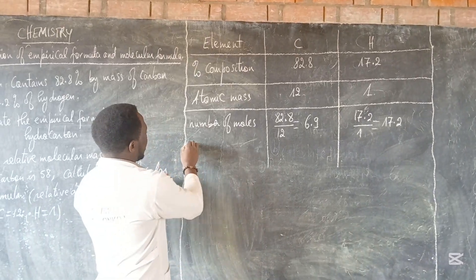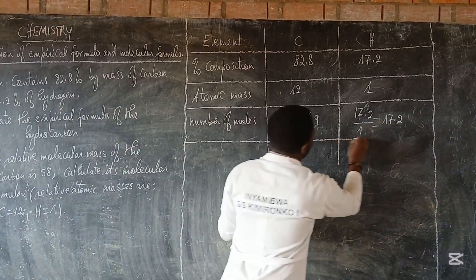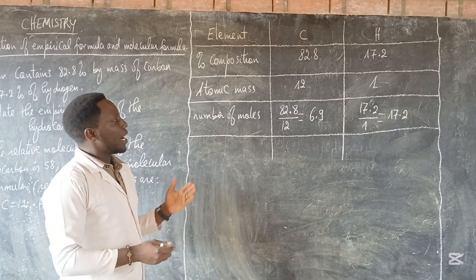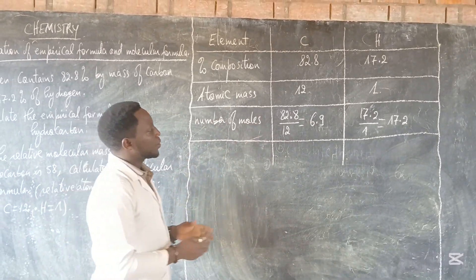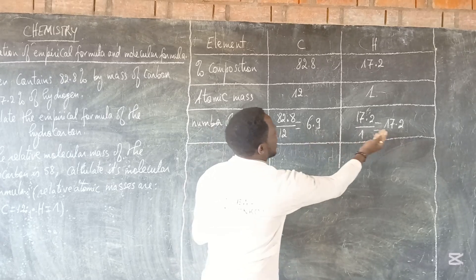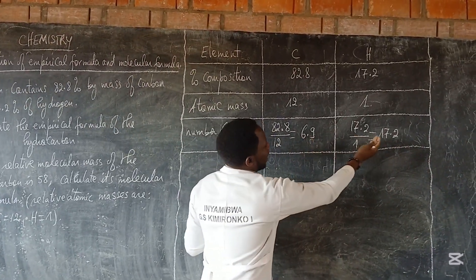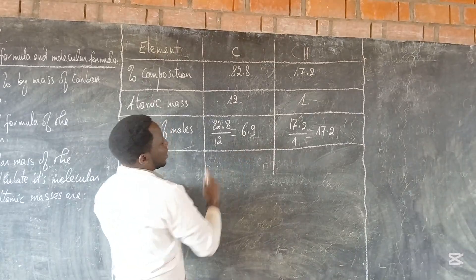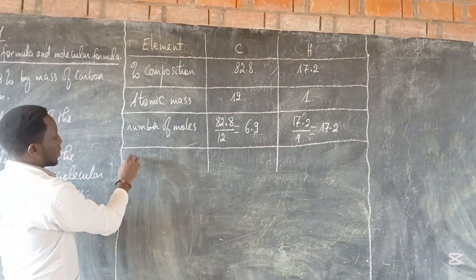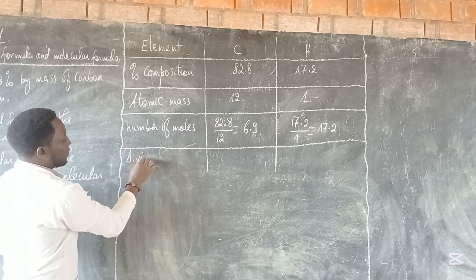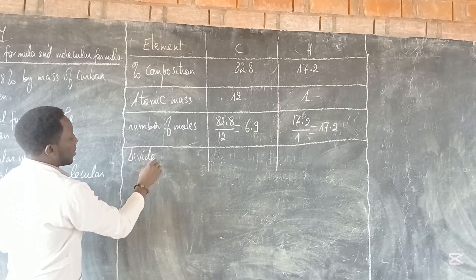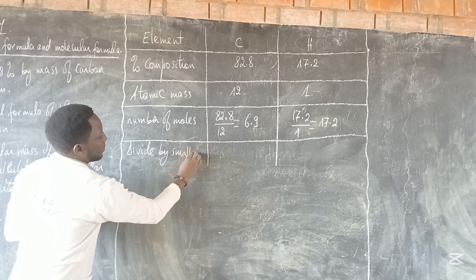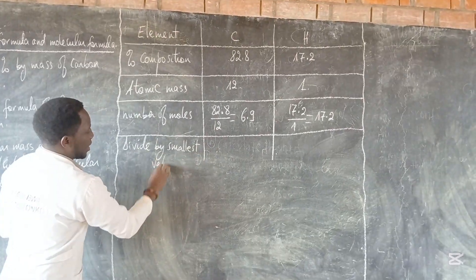Here we get the number of moles. After getting the number of moles, we have to divide. We need to identify the simplest value that we have — 6.9 and 17.2. The simplest number is 6.9. That is why we have to divide all answers by the smallest value.